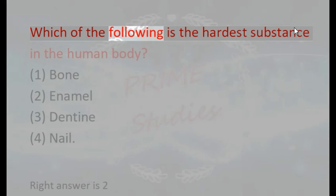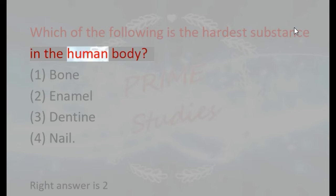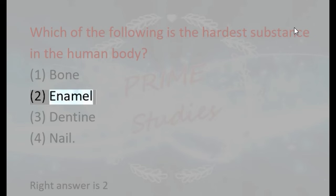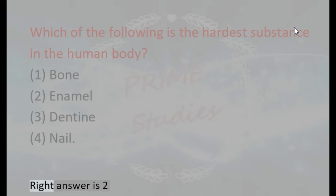Which of the following is the hardest substance in the human body? 1. Bone, 2. Enamel, 3. Dentine, 4. Nail. Right answer is 2.